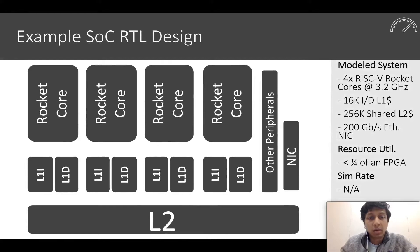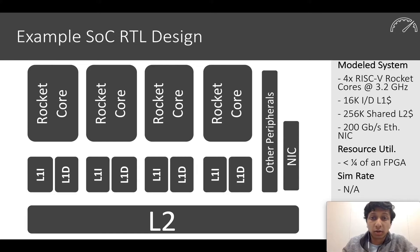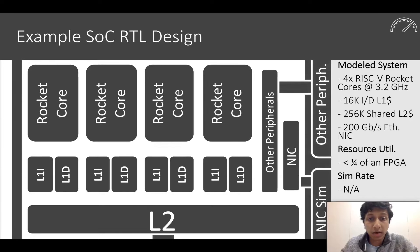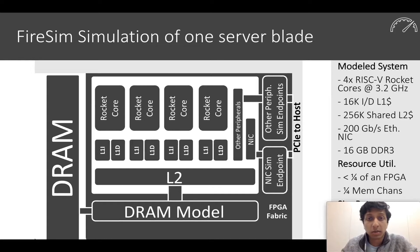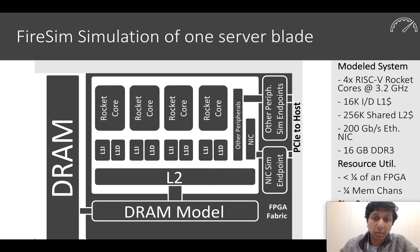Let's take a look at the design we'll use as an example and optimize in our case study. This is a quad-core RISC-V Rocket Chip based system. Interestingly, this system has an Ethernet NIC attached to it, implemented in Chisel, and it's intended to drive a 200 gigabit Ethernet network. We can take this design in FireSim and build an FPGA simulation — we clock-gate the design and add models that provide correct I/O performance from the perspective of the simulated system.